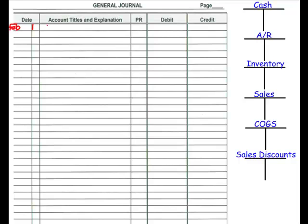When we enter this transaction in the general journal, we're going to debit accounts receivable, because this was a sale with terms — so it's a sale on credit — and we're expecting to receive $3,400 from our customer. We're going to credit our sales account. This is a new account used to record the sales of merchandise. That sales account is a revenue account, so it goes up with credit and down with debit, and the credit for the sale is $3,400.